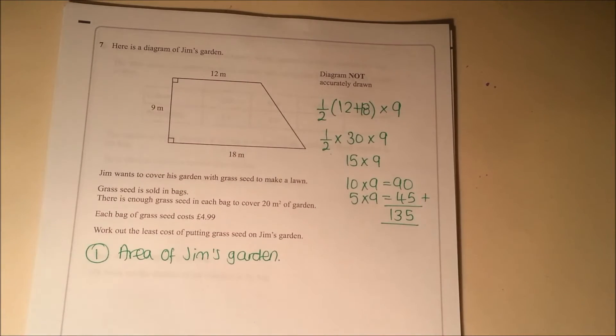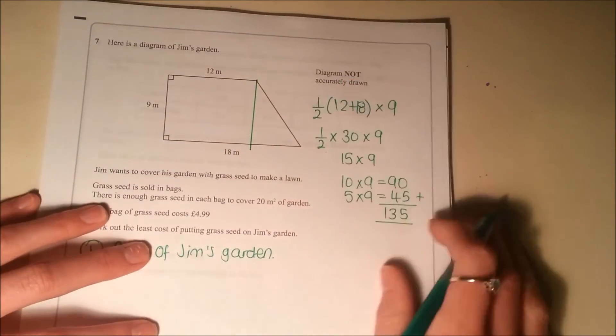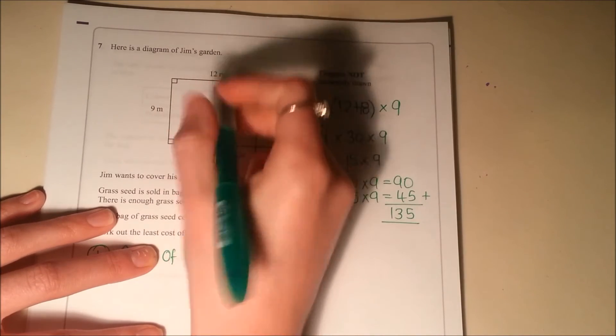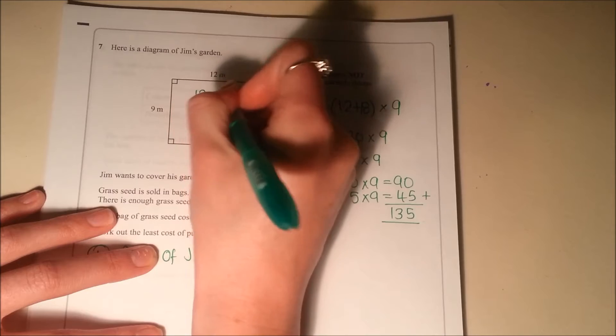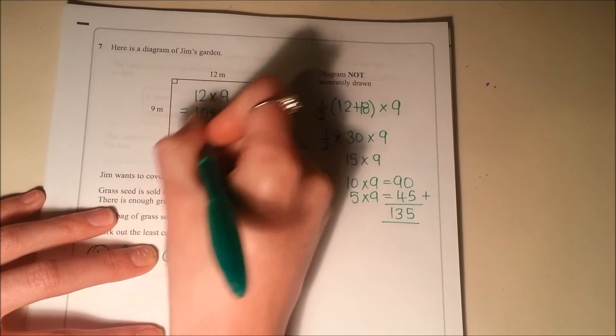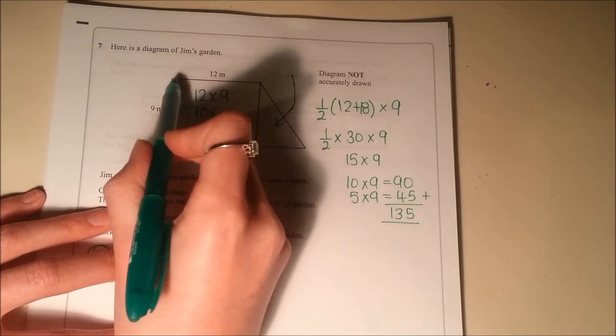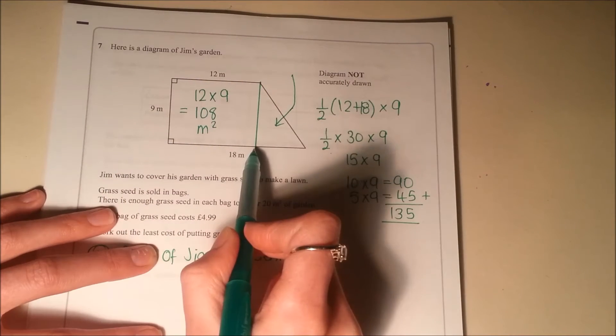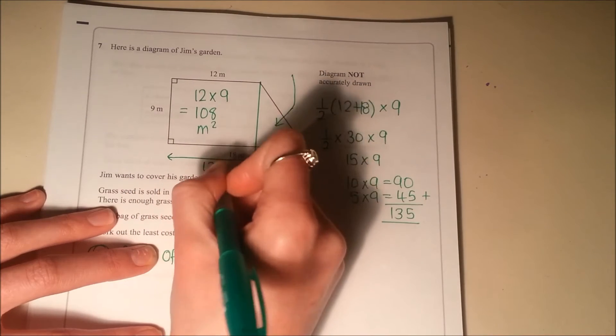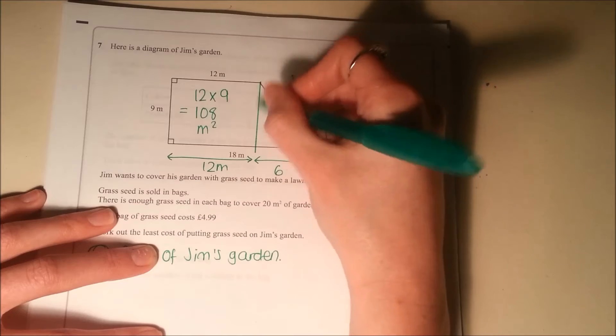Alternatively, what you could do is take that shape and split it into a triangle and a rectangle. So the area of this rectangle here is going to be length times width, so 12 times 9. So 12 times 9 is going to be 108 square metres. This triangle here, well if this length is 12 and the whole length is 18, then this little bit here is 12. And if the whole thing is 18, then that's going to be 6. And if this is 9, then this is 9.